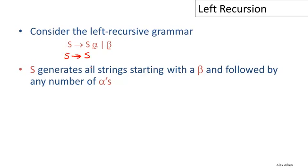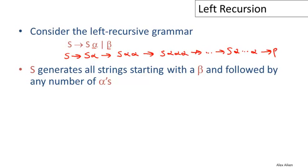The language this grammar generates is all strings that start with beta followed by any number of alphas. Writing out a derivation: S goes to S alpha, goes to S alpha alpha, and so on, giving S followed by any number of alphas. Then substituting beta, we get beta followed by any number of alphas. But it produces the string right to left — the very last thing produced is the first thing in the input — which is why it doesn't work with recursive descent parsing.